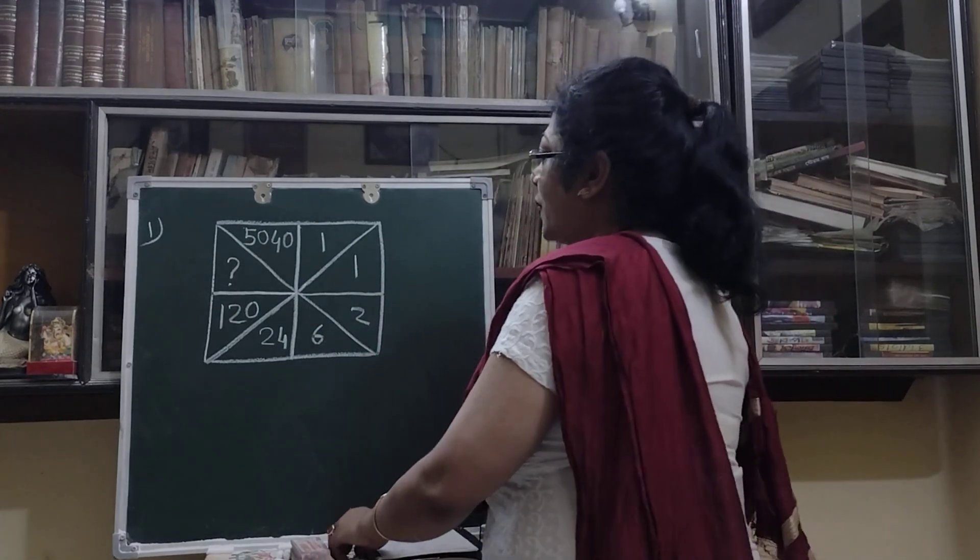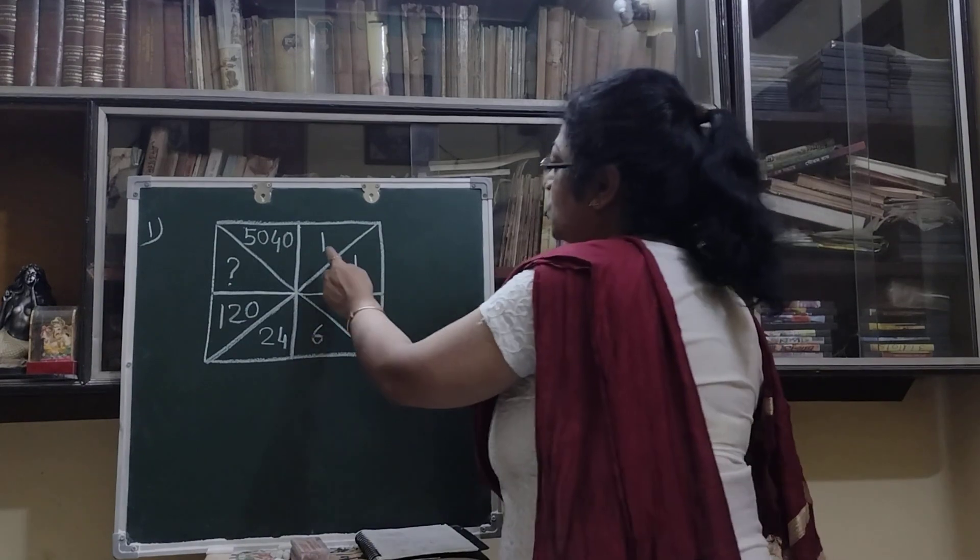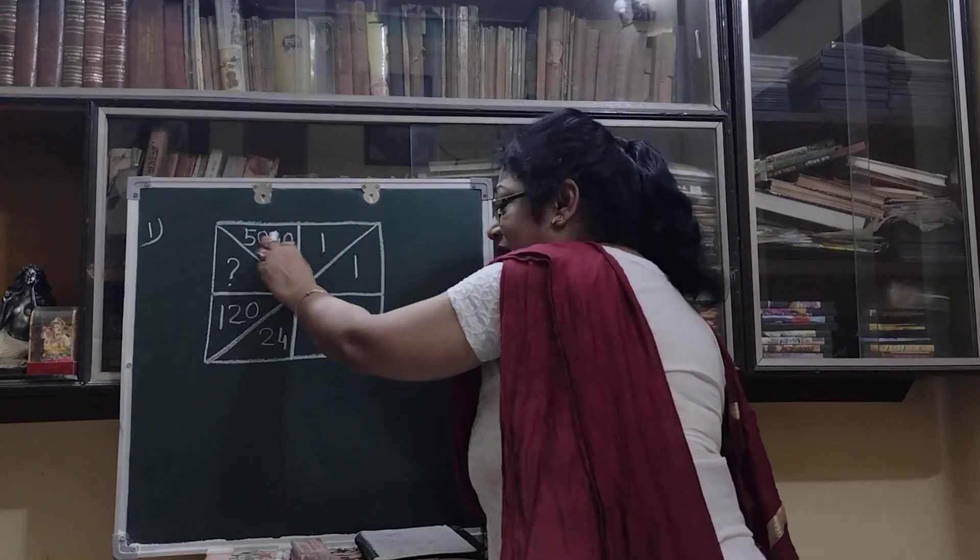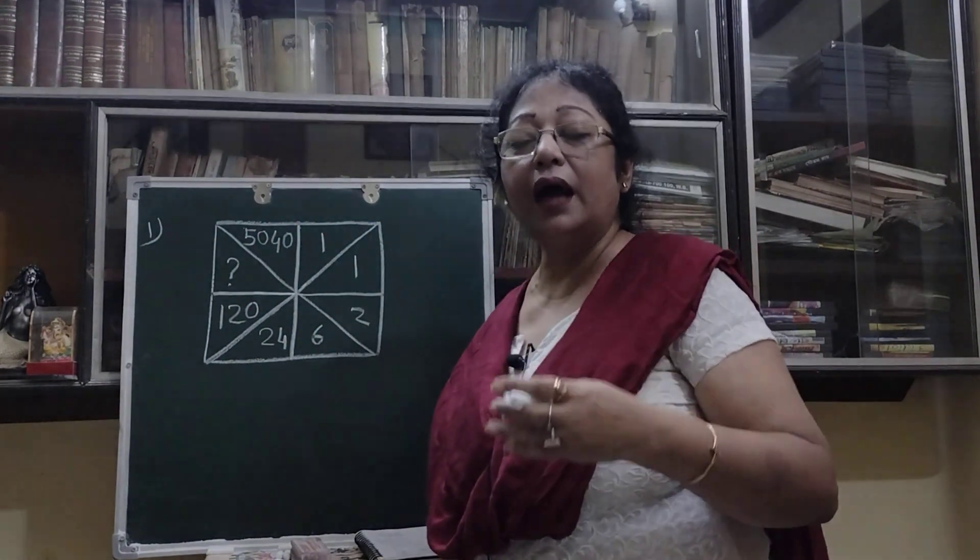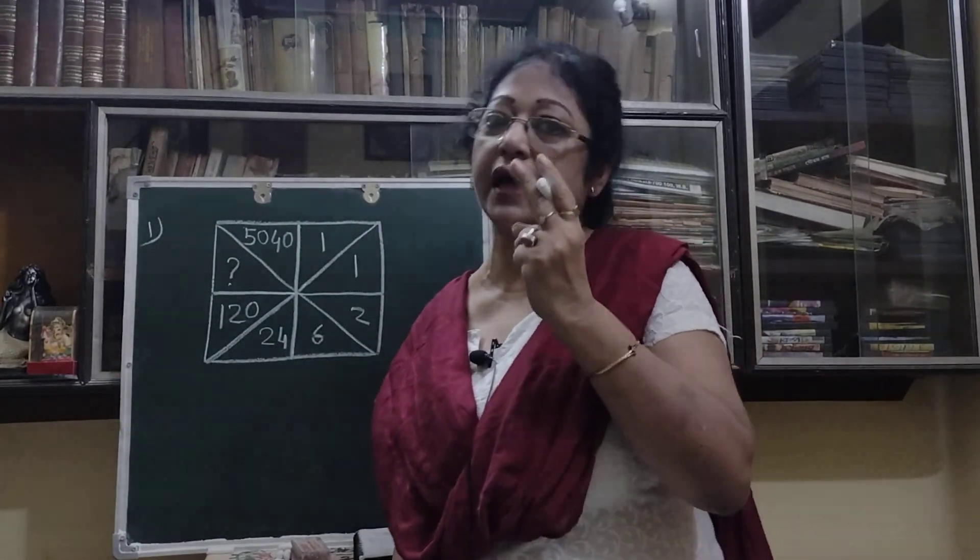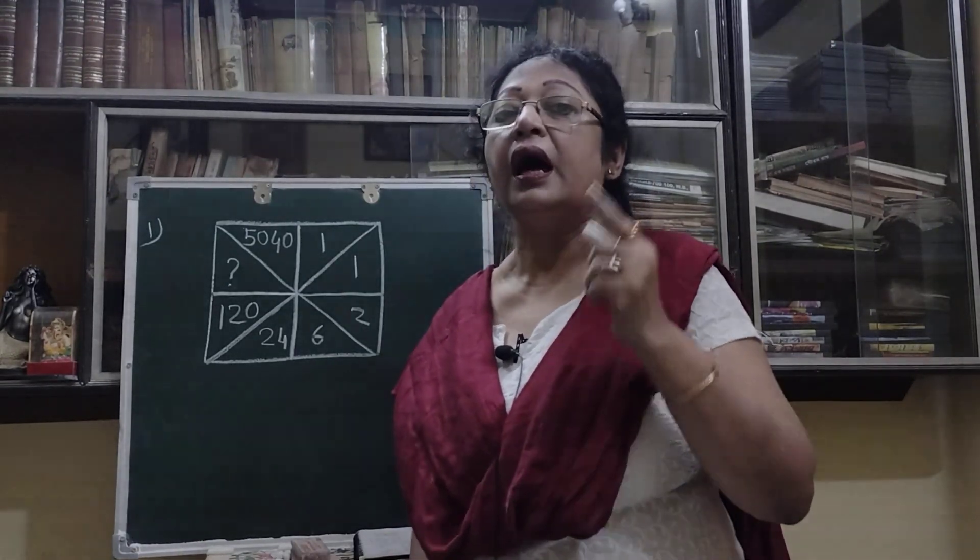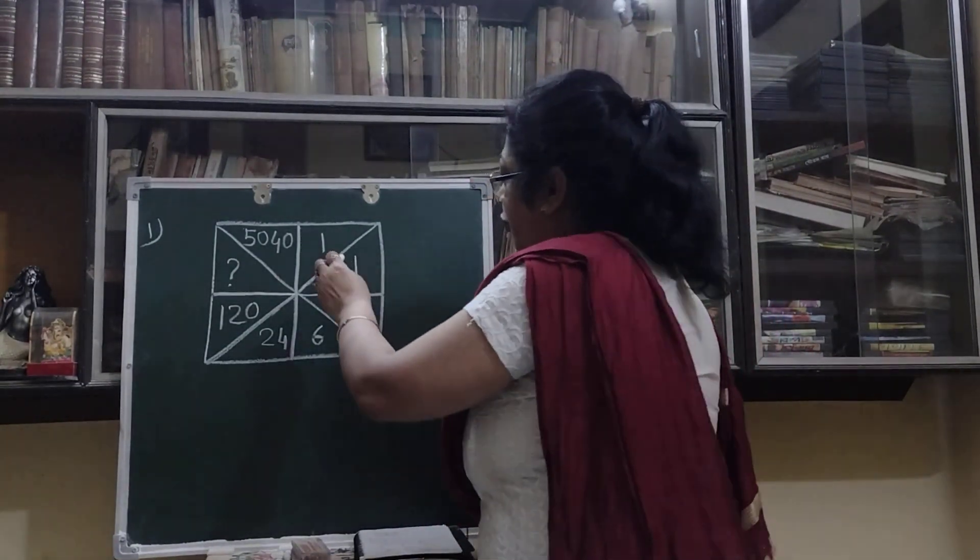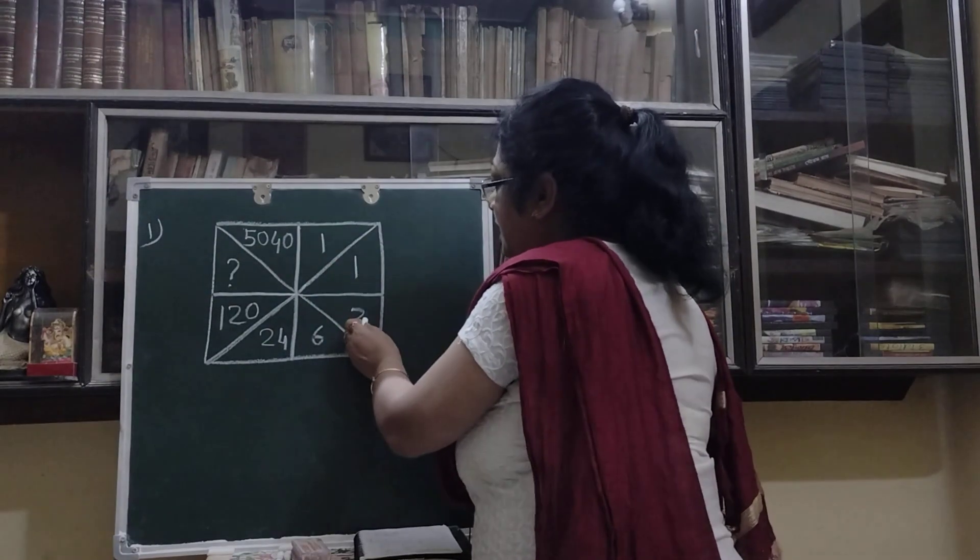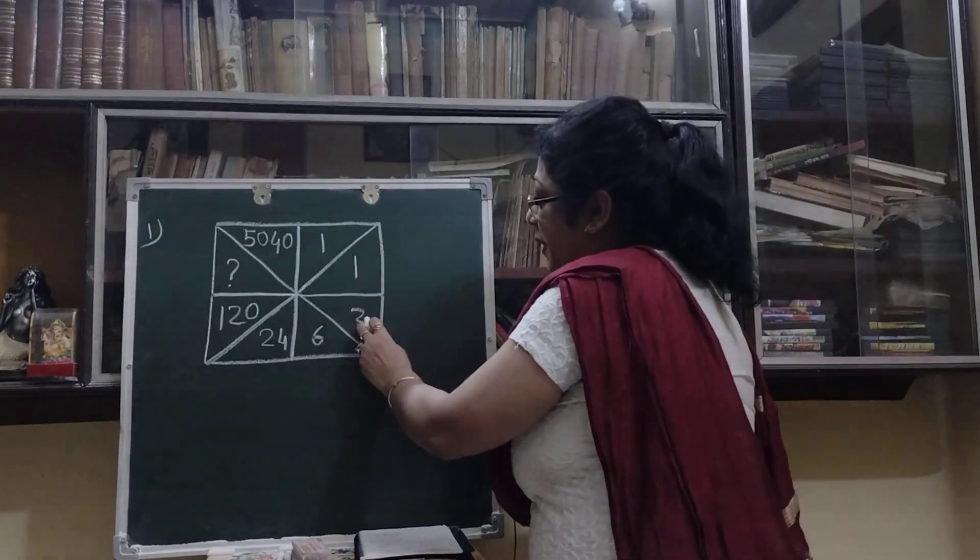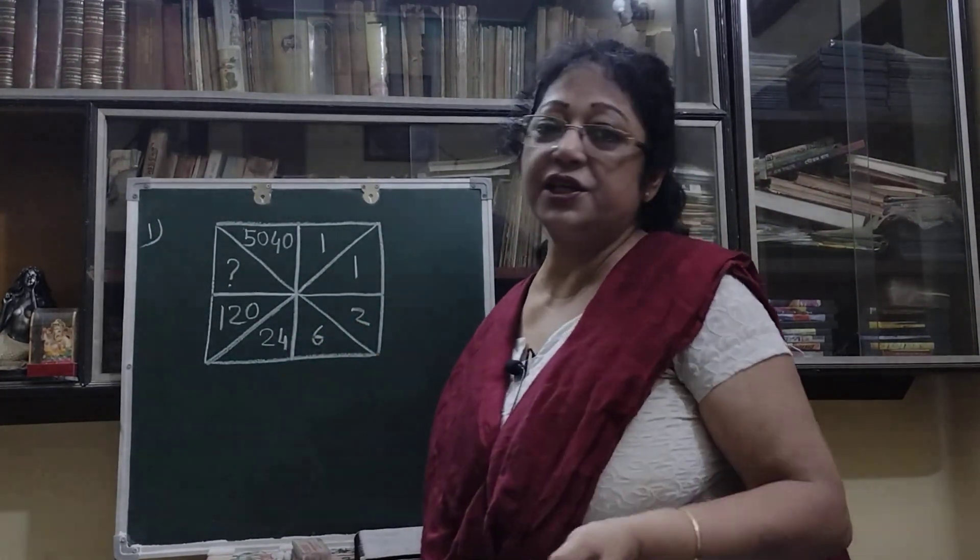So let us start. Our first puzzle is this one. Here is 1, 1, 2, 6, 24, 120, then the missing number, then a bigger number. When the number is coming from smaller to bigger, two things can we take: one is addition and second is multiplication. Here, if we do addition 1 plus 1 that is 2, this logic is working, but plus 6 plus 2 is not 24, so addition will not work.